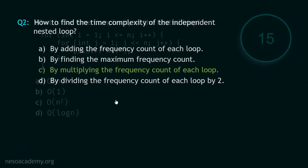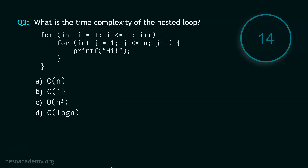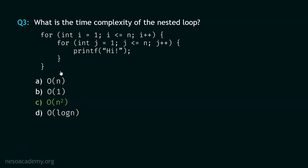Now let's go to question number 3, and your time starts now. Stop. The correct option is option C. This represents the time complexity of this nested loop, and this is the independent nested loop. The time complexity of this nested loop is Big O of N square.